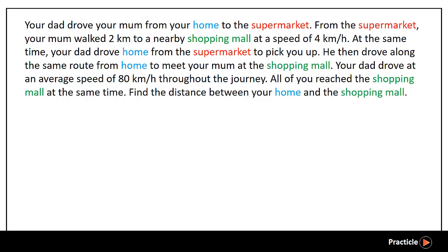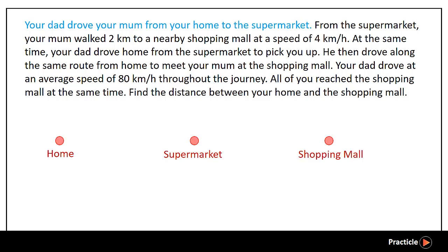Let's try to draw a speed diagram to help us see what is going on better. We know that there are three points, so let's label your home, the supermarket, as well as the shopping mall. Now let's read through the question again.